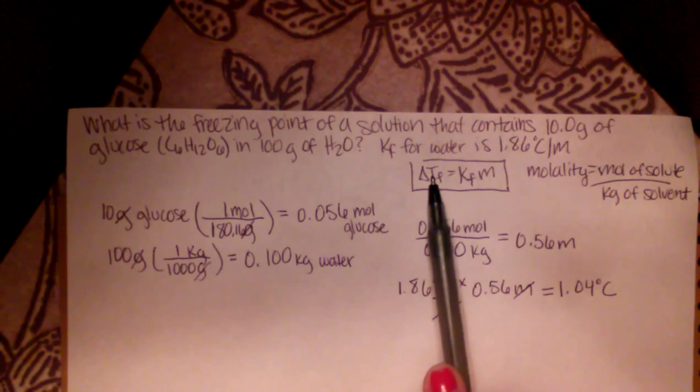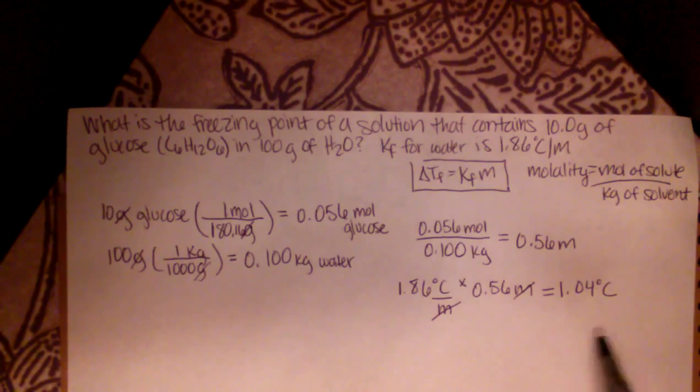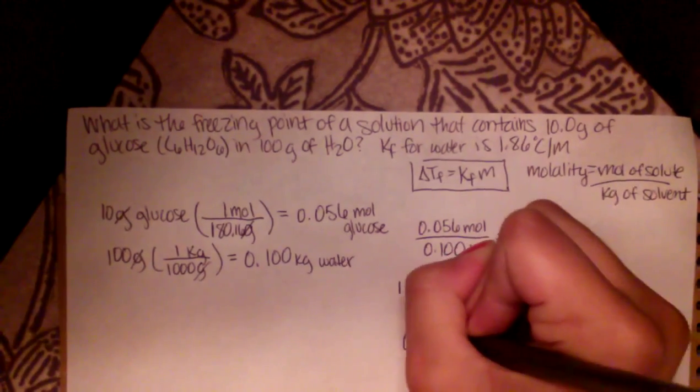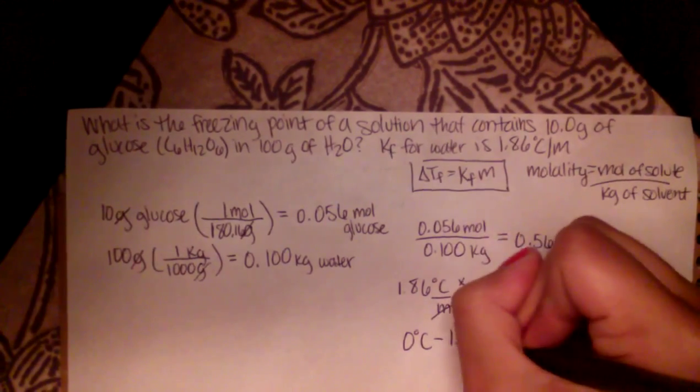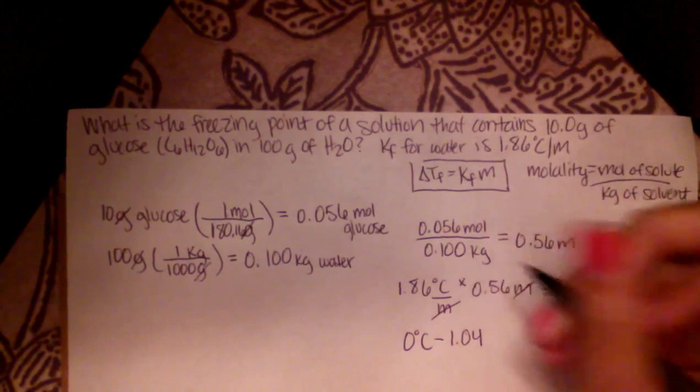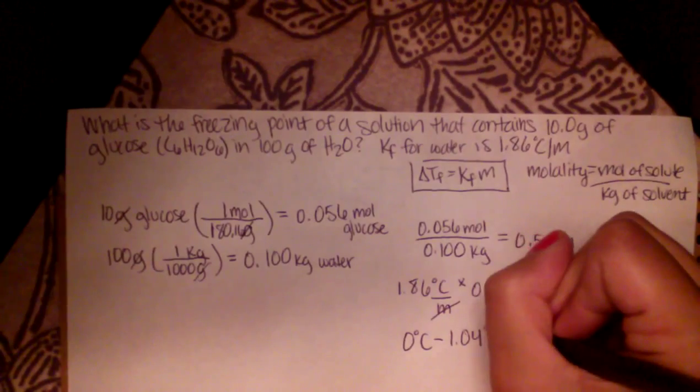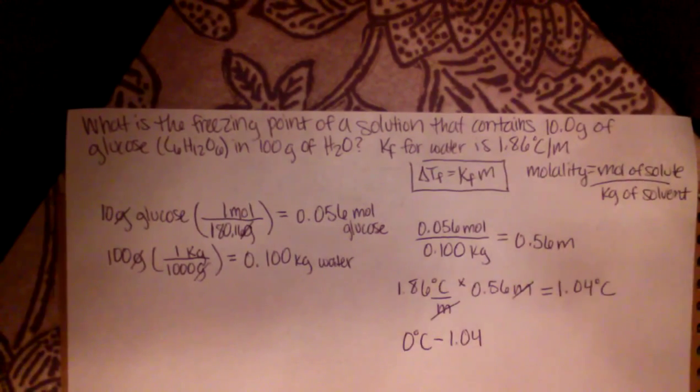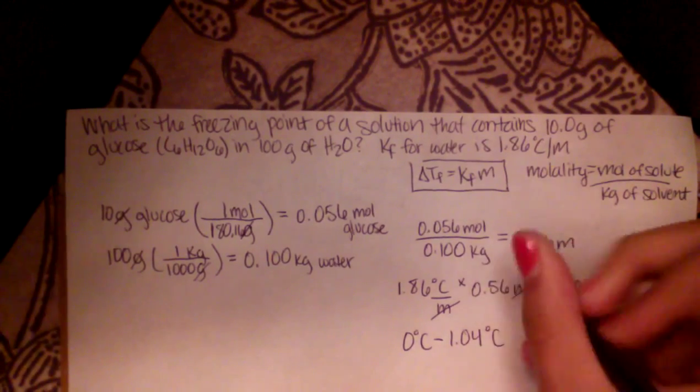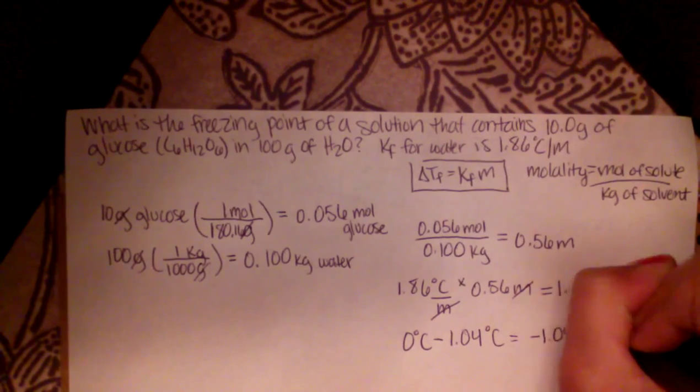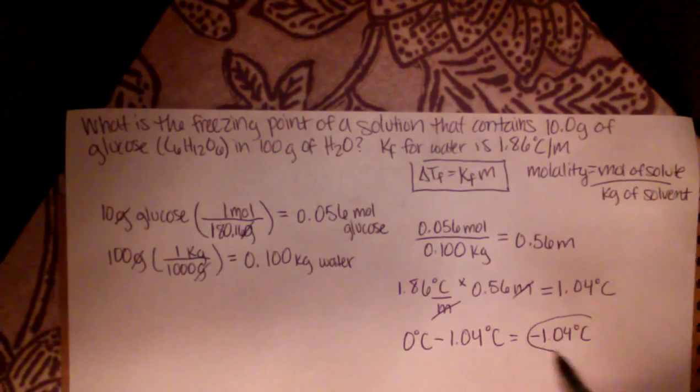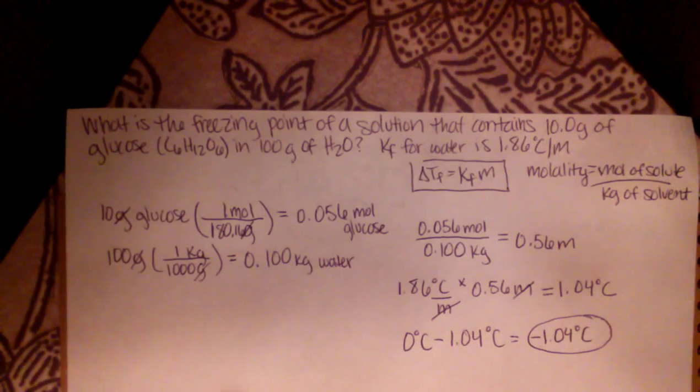And we've determined that the change in temp was 1.04 degrees Celsius. So basically, you take 0 degrees Celsius and you minus the value of the 1.04 degrees Celsius. And you'll get negative 1.04 degrees Celsius. And that is your final answer for the freezing point of the solution.